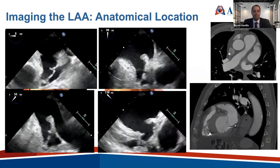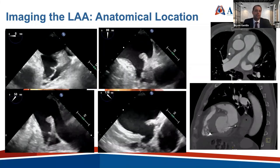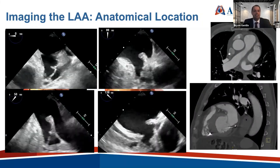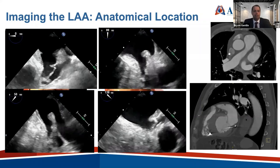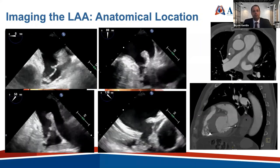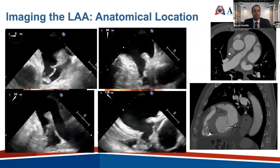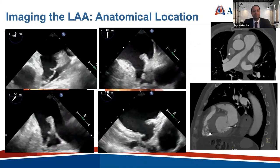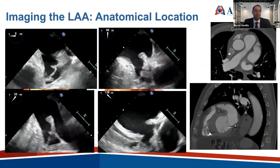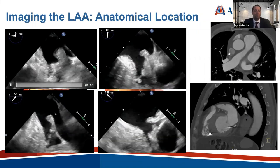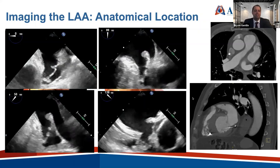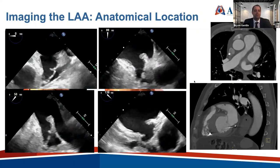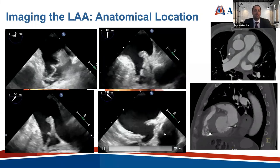I tend to image the appendage every 10 to 15 degrees and record an image at each interval when screening for pathology and looking for thrombus. When measuring the left atrial appendage, we typically take four different views: 0, 45, 90, and 135 degrees. This helps us understand the morphology. At lower angles — 0 and 45 — the appendage often looks like a windsock morphology. At the high angle view, we're cutting through the main part and can see more complex morphologies, including accessory lobes.